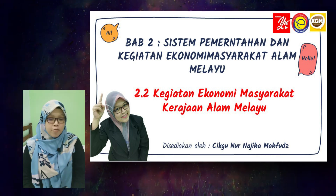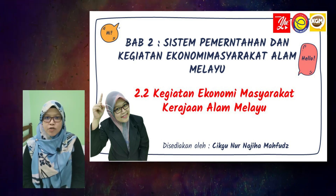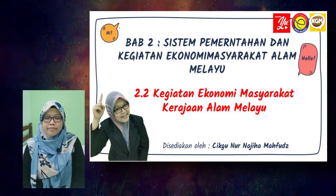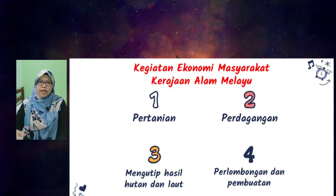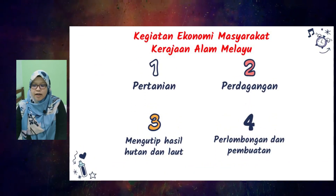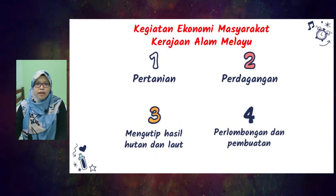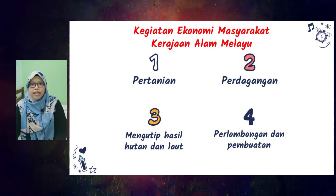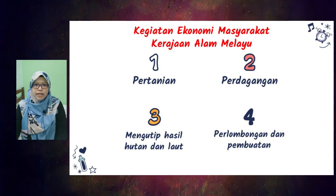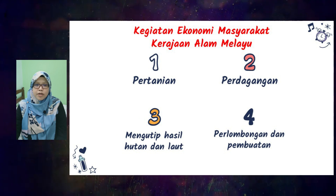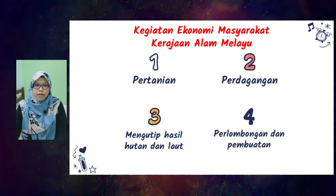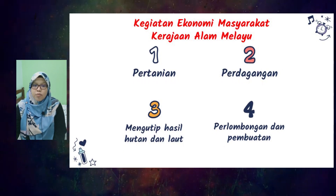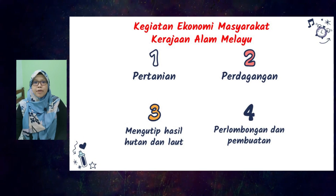Para pelajar boleh merujuk buku teks muka surat 28. Kegiatan ekonomi yang dijalankan oleh masyarakat kerajaan alam Melayu adalah: pertama, pertanian; kedua, perdagangan; ketiga, mengutip hasil hutan dan laut; dan keempat, pelombongan dan pembuatan.